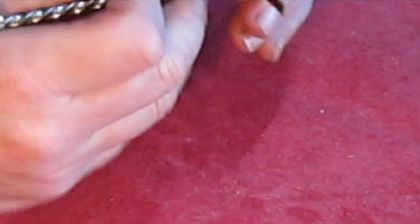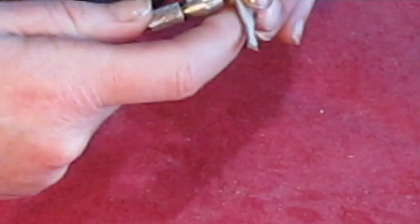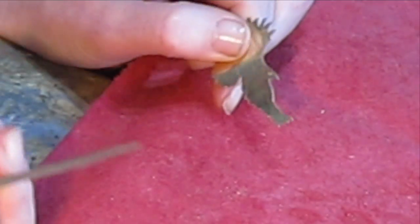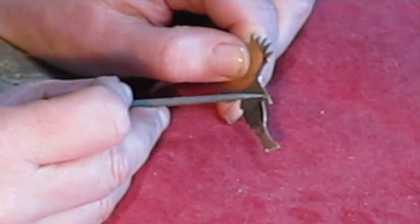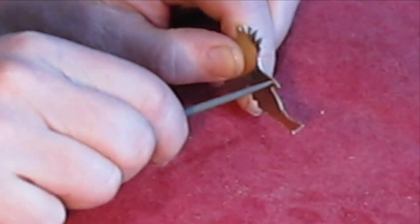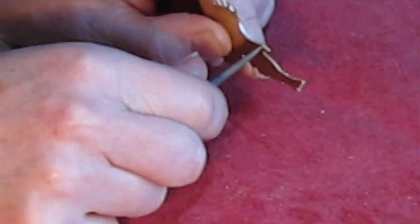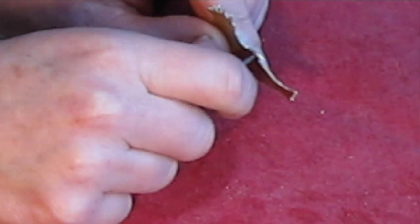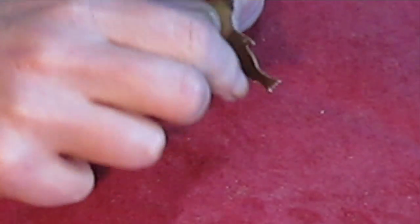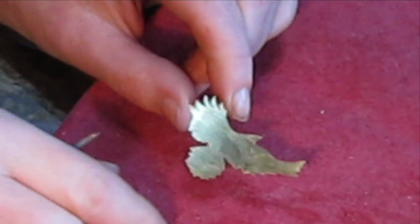I'm now going to take a round needle file and just ream the hole out a little bit to clean it up and enlarge it. Now we have one bird with an eye.